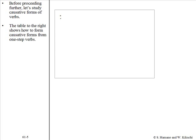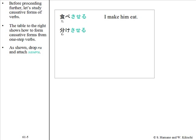Before proceeding further, let's study causative forms of verbs. The table to the right shows how to form causative forms from one-step verbs. For example, 食べる becomes 食べさせる. As shown, drop る and attach させる. Another example: 分ける becomes 分けさせる.